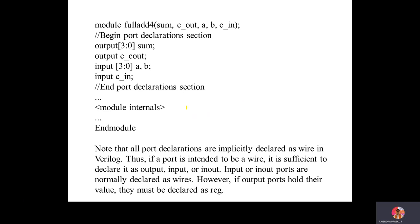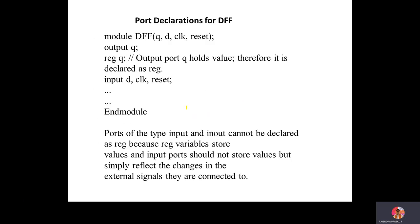Note that all port declarations are implicitly declared as wires in Verilog. If ports are intended to be used as wires, it is sufficient to declare them as input, output, or inout. Ports are normally declared as wires; however, if an output port holds a value, it must be declared as a register. For a D flip-flop, the module has ports Q, D, clock, and reset. Q is the output and D, clock, reset are the inputs. Output Q must be declared as a register.